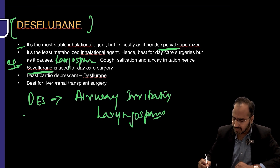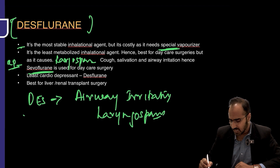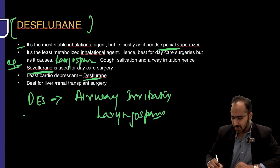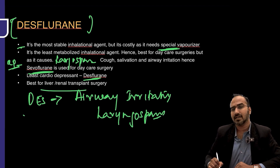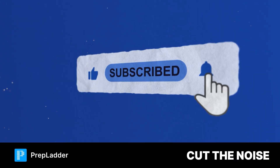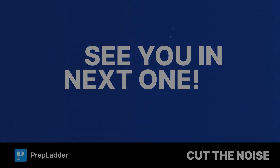Because desflurane causes laryngospasm, cough, salivation, and airway irritation, alternatives are preferred for daycare surgery nowadays. In summary: desflurane is the best agent for cardiac, liver, and renal surgeries. Don't forget to like and subscribe if you found the video interesting — see you in the next one.